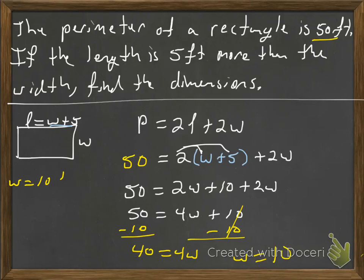So the width is 10 feet, and the length is 15 feet. If I add up the length, 15 plus 15, that's 30. Add up the two widths, 10 plus 10, that's 20. 30 plus 20 is 50, so it checks out.